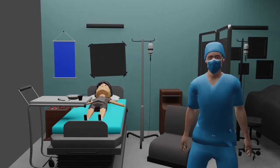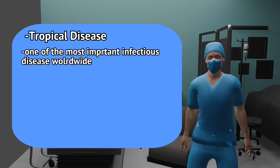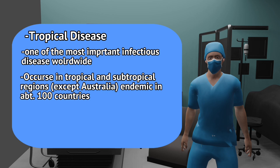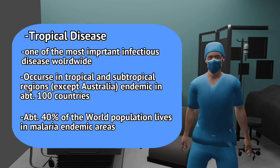Malaria is a tropical disease and one of the most important infectious diseases worldwide. It occurs in tropical and subtropical regions of all continents except Australia, endemic in about 100 countries. About 40% of the world population lives in malaria endemic areas.